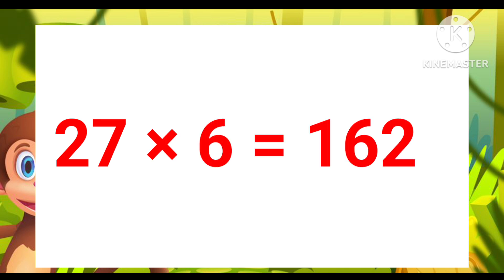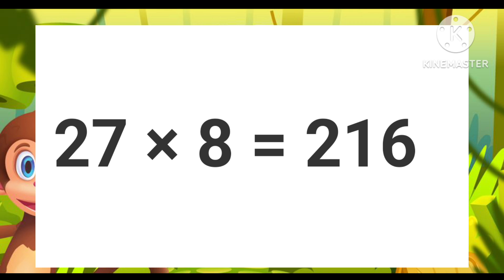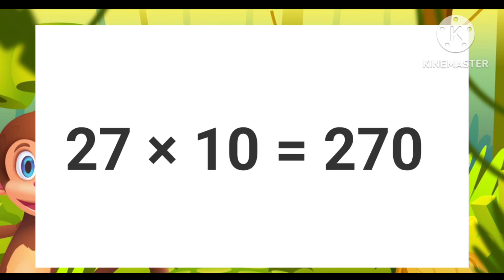27 sixes are 162. 27 sevens are 189. 27 eights are 216. 27 nines are 243. 27 tens are 270.